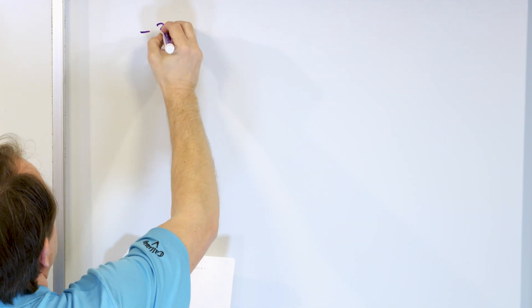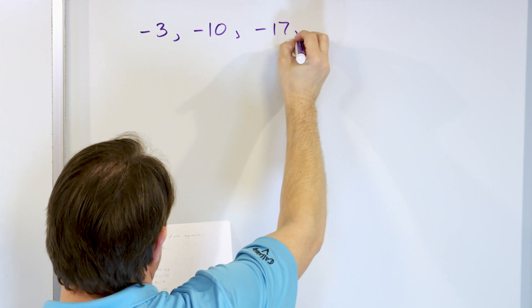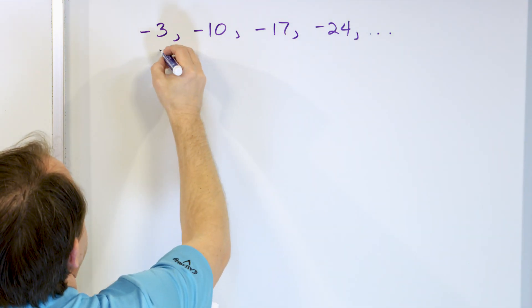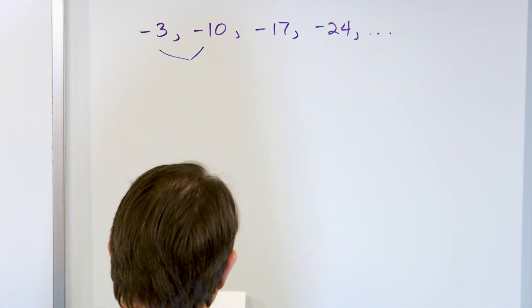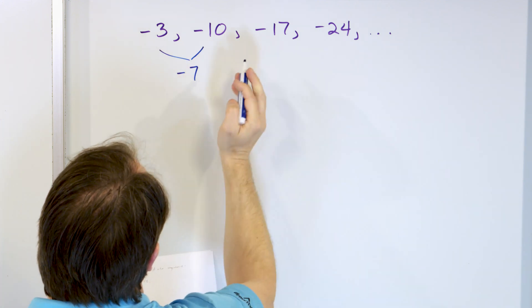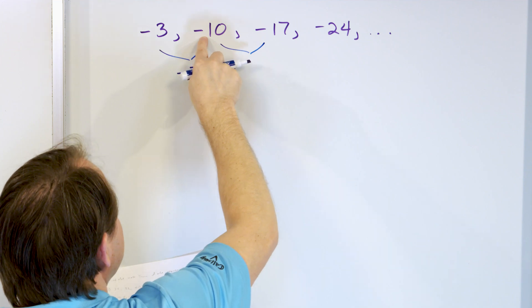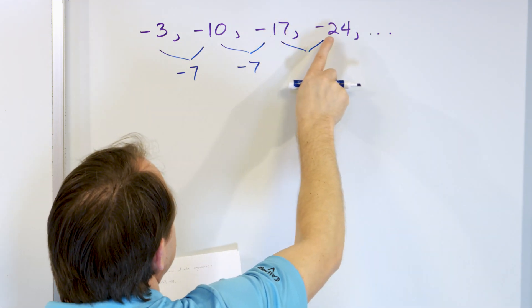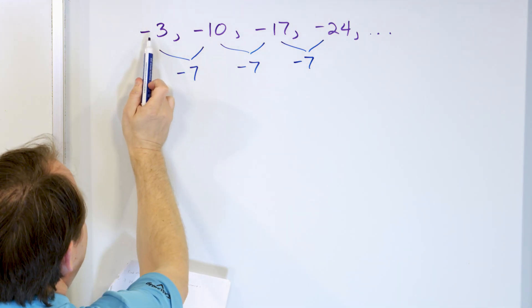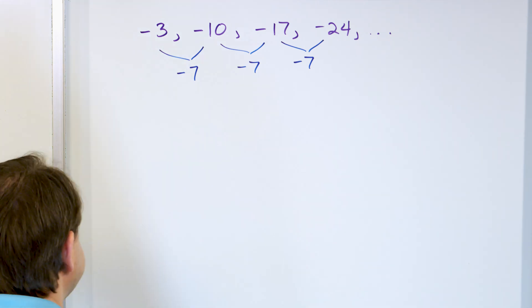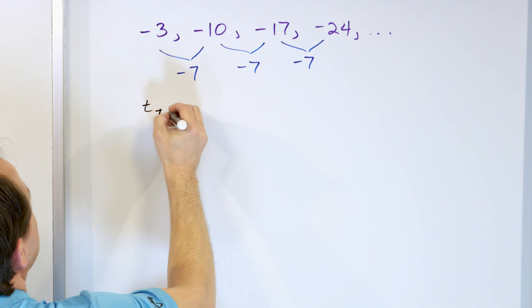Let's practice more. What if the sequence is negative 3, negative 10, negative 17, negative 24, and so on? Give an equation for the nth term. First, find the common difference: negative 10 minus negative 3 is negative 7. Negative 17 minus negative 10 is again negative 7. Negative 24 minus negative 17 is again negative 7. The common difference d is negative 7, and T sub 1 is negative 3.